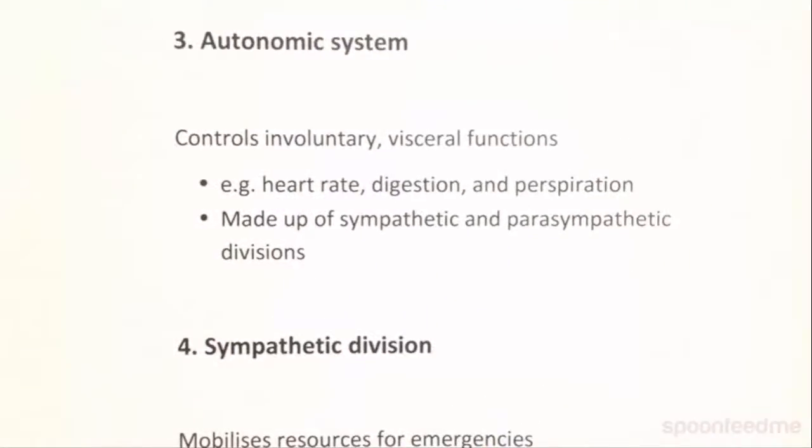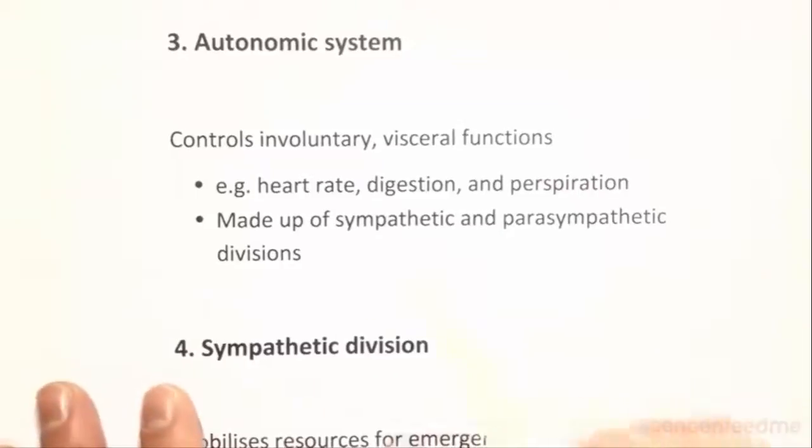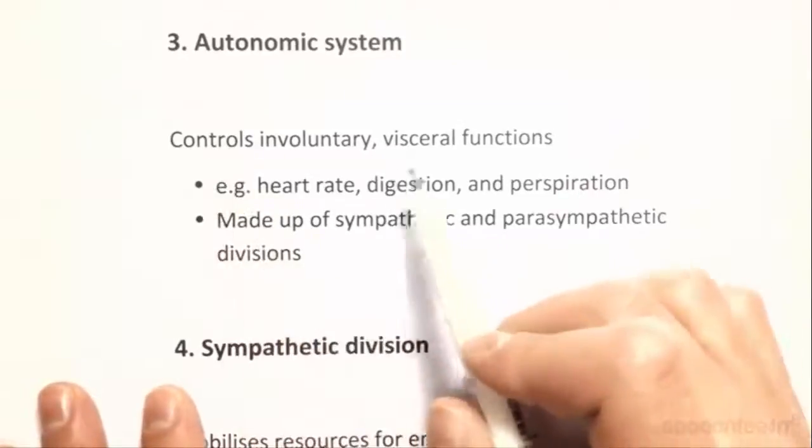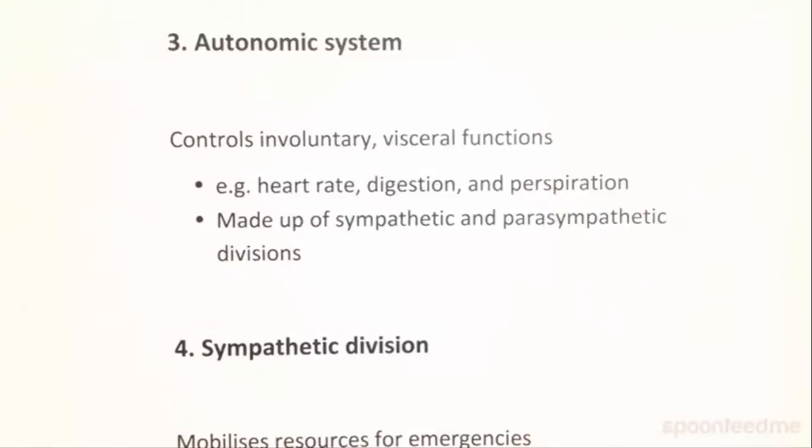The autonomic system is the other part of the peripheral nervous system. Remember, there's the somatic system we've just talked about, the afferent and efferent nerves, the sensory and motor nerves. And this is the autonomic system, the one that controls involuntary visceral functions. This includes the heart rate, digestion, perspiration, pupils, sweating, genitals, things like that.